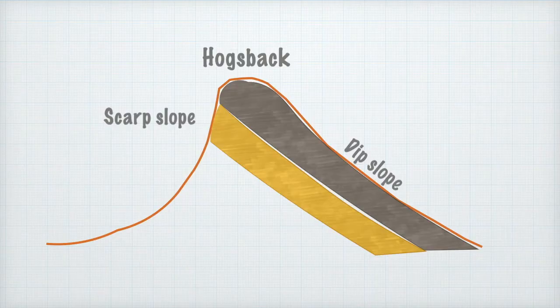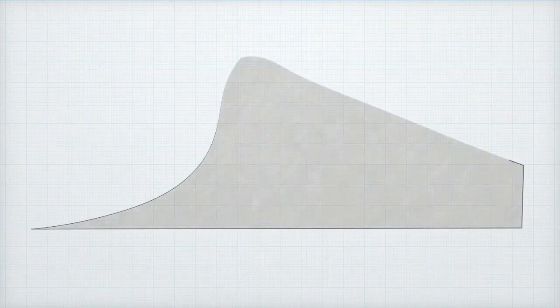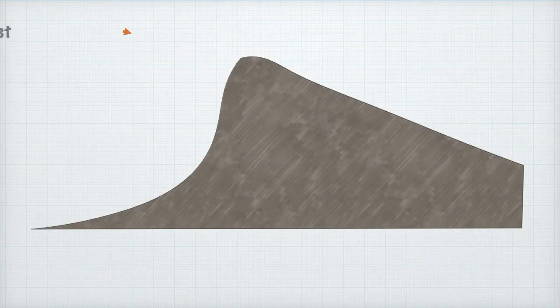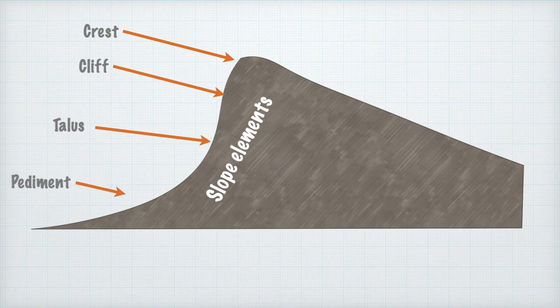As with horizontal strata, we also get different slope elements here. We get the same elements: a crest, a cliff, a talus, and a pediment. So the slope elements are the same as what we would get with horizontal strata.